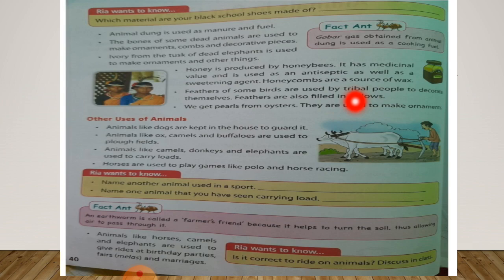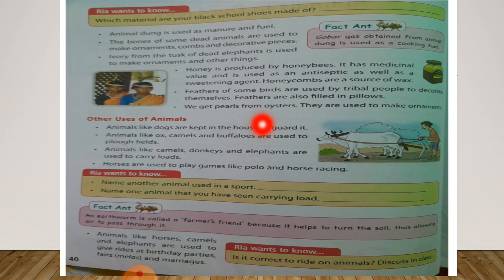We get pearls from oysters. Oysters are aquatic animals. What do you mean by aquatic animals? Aquatic animals are animals which live in water. Pearls are used to make ornaments.